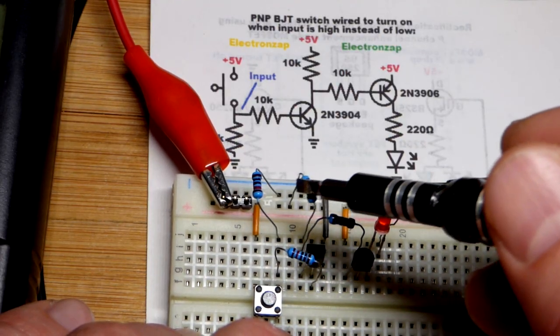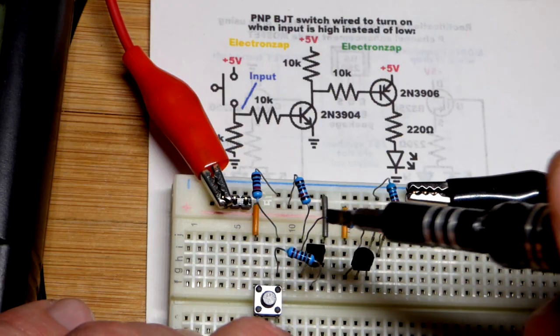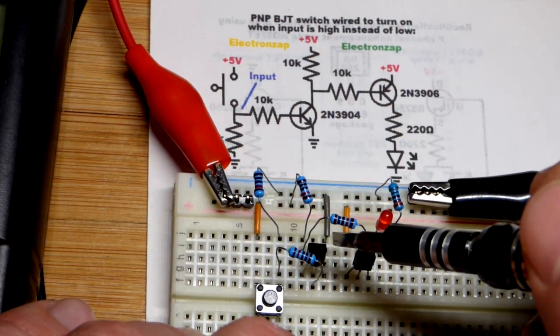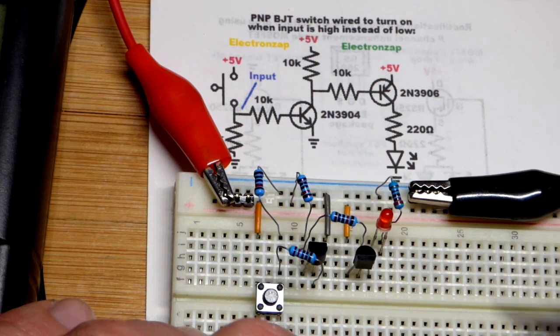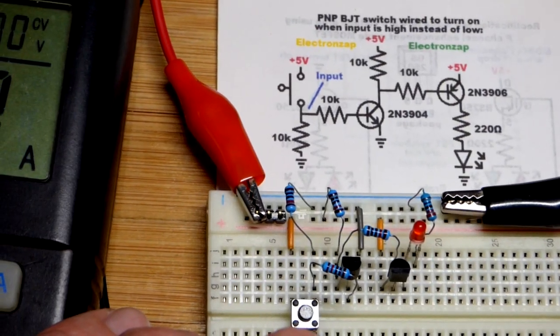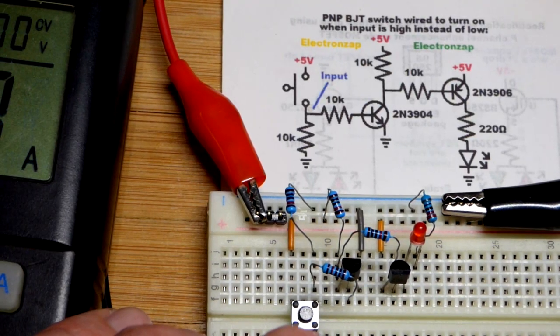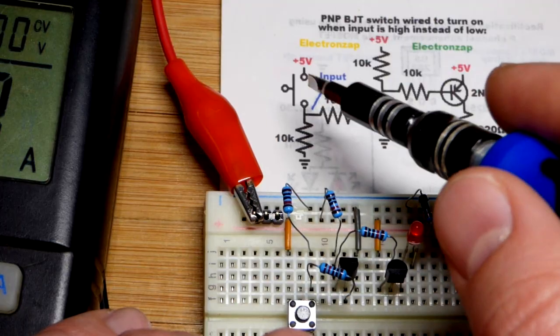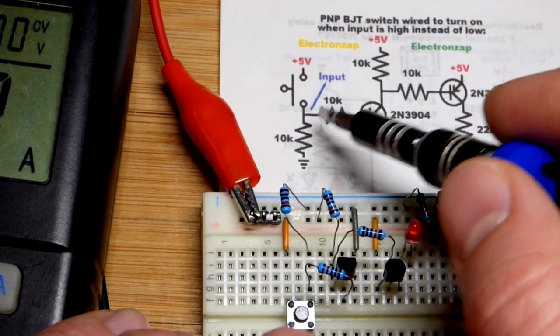We have our pull-up resistor for sending the signal - it gives a high input until the transistor turns on to give a low input. To turn the NPN transistor on, which will then turn the PNP transistor on, we have to give a high input to the NPN.